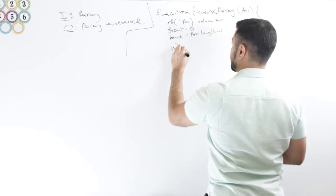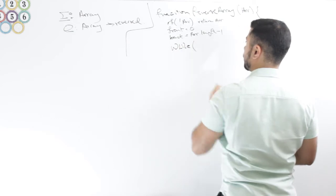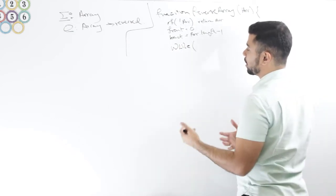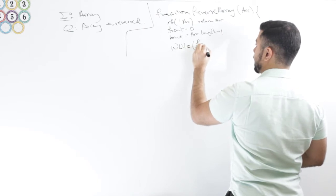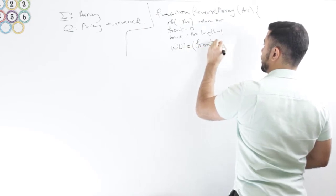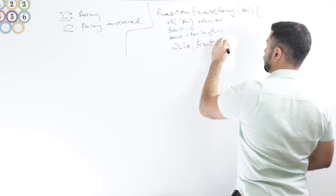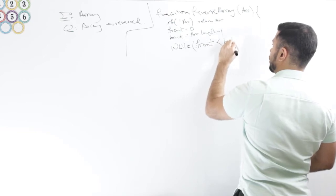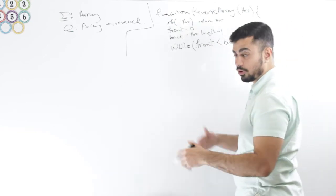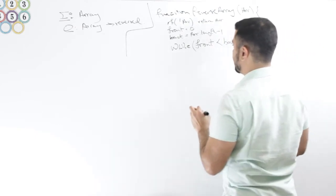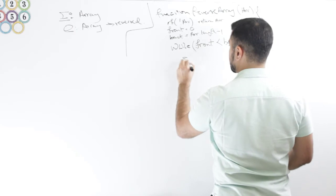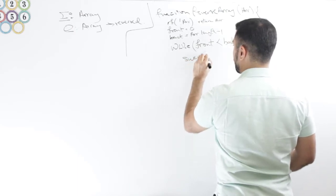Let's say I'm starting a while loop and the stopping condition would just be that while front is less than back. So anytime front is equal to or greater than back, we just stop right there.